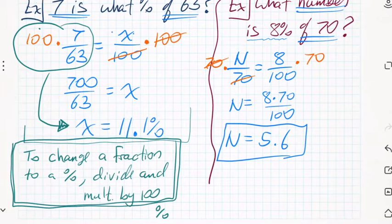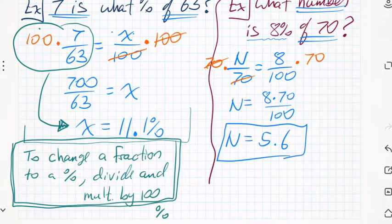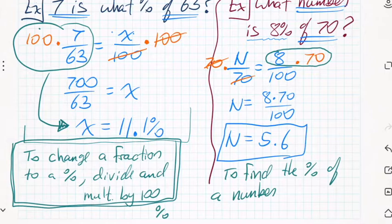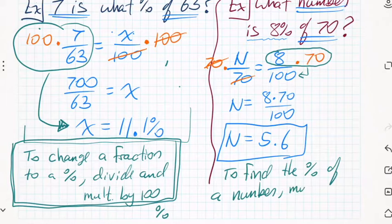On the other side, finding the percent of a number: take the number, multiply it by the percent, and divide by 100. From the example, we took 70, multiplied it by 8, and divided by 100. So to find the percent of a number: multiply by the percent and divide by 100.